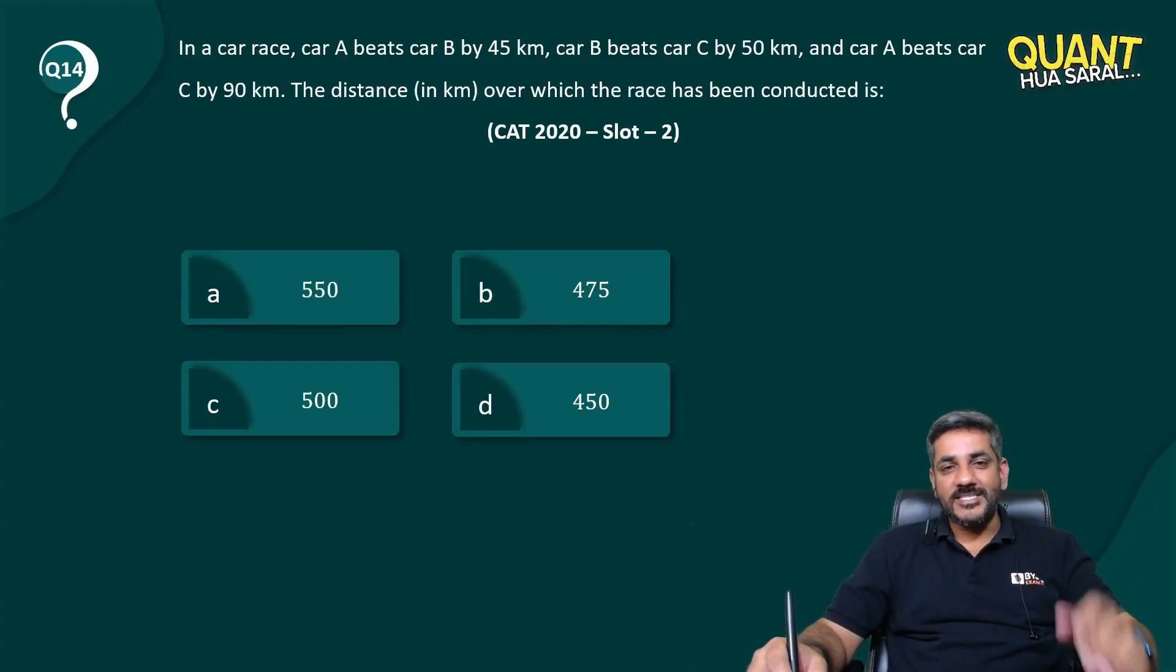Hi guys, another question now - question number 14 that you have on the screen, once again from the same series. Let's have a look. In a car race, car A beats car B by 45 kilometers, car B beats C by 50 kilometers, and car A beats car C by 90 kilometers. The distance over which the race has been conducted.